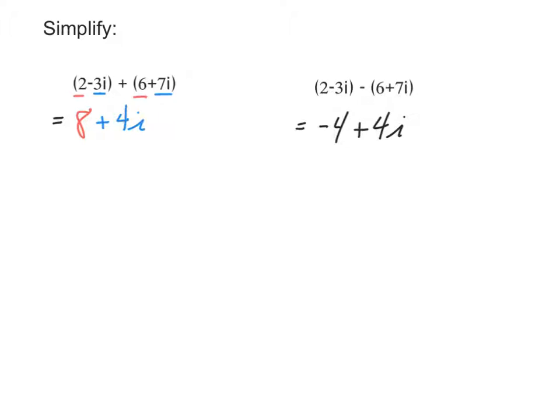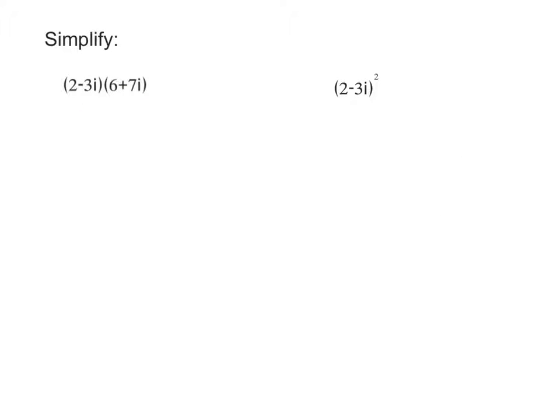One way to get around that is to first of all just take your time, or distribute the negative. So rewrite this as 2 minus 3I minus 6 minus 7I. Then it's a lot easier to see that the two real parts, 2 minus 6, that makes negative 4. And then you do the two imaginary parts: negative 3 minus 7, that's negative 10I.